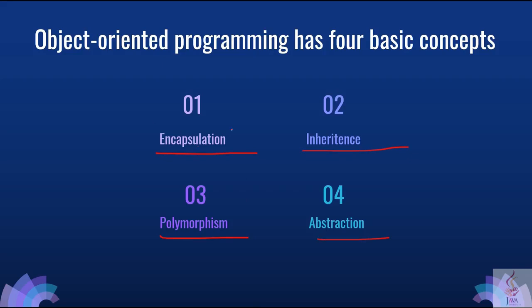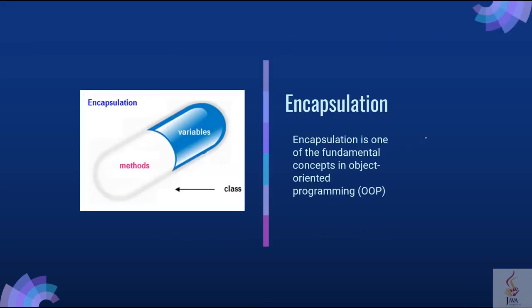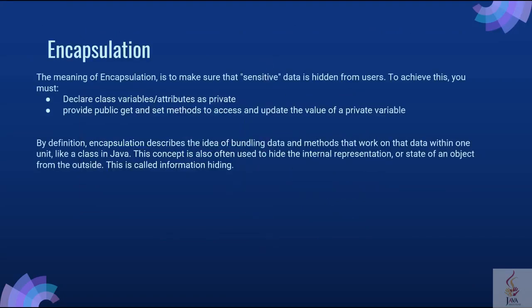First of all let's discuss about encapsulation. Encapsulation is one of the most fundamental concepts in object oriented programming. It is a mechanism to wrap up variables and methods together as a single unit. It is a process of hiding information details and protecting data and behavior of the object. The encapsulated class is easy to test, so it is also better for unit testing. The meaning of encapsulation is to make sure that the sensitive data is hidden from the user. To achieve this, you must declare class variables and attributes as private.